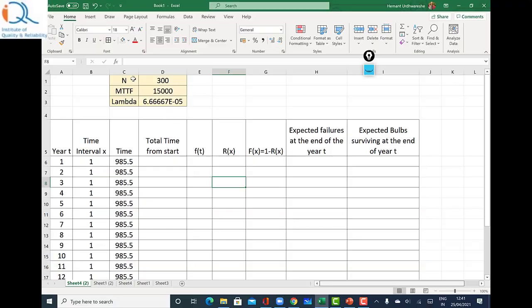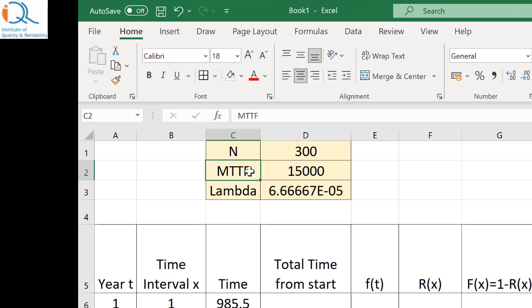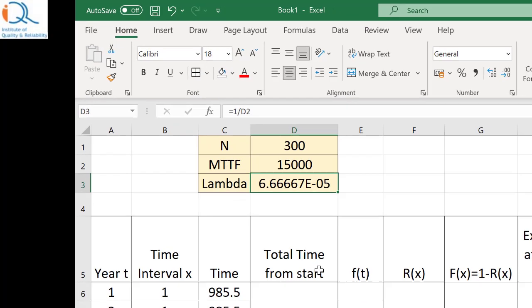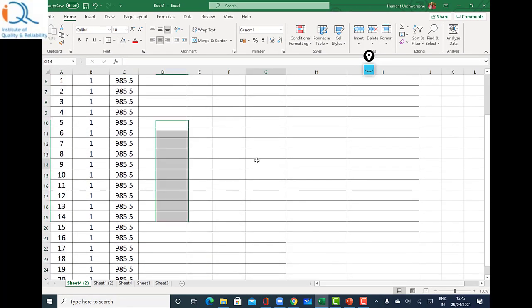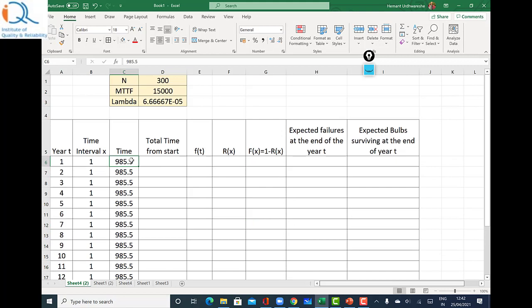I have created a table of total bulbs equal to 300, mean time to failure of 15,000 and lambda reciprocal of 15,000. And 1 to 20 years table I have made, every year you got 985.5 hours. So total time from start for the first year will be 985.5. For the second year it will be 985.5 plus the same numbers. And I copy this. So this is the total time from start.